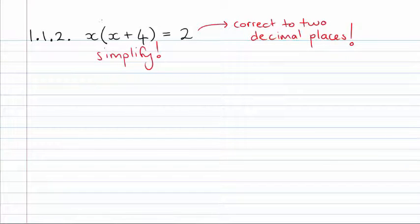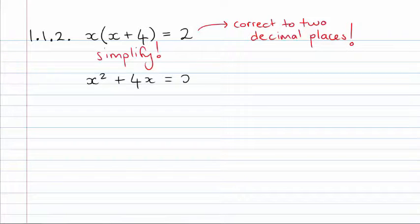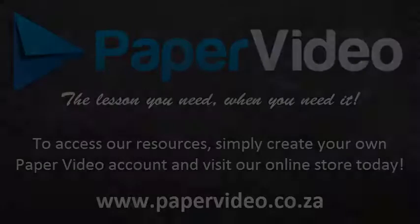Let's check it out. X times X, we've got our X squared. X times 4, we've got plus 4X. That is equal to 2. And then what jumps out at us? The fact that this is a quadra...